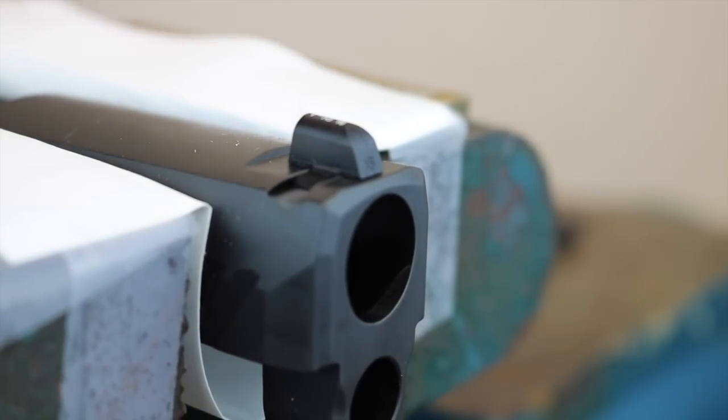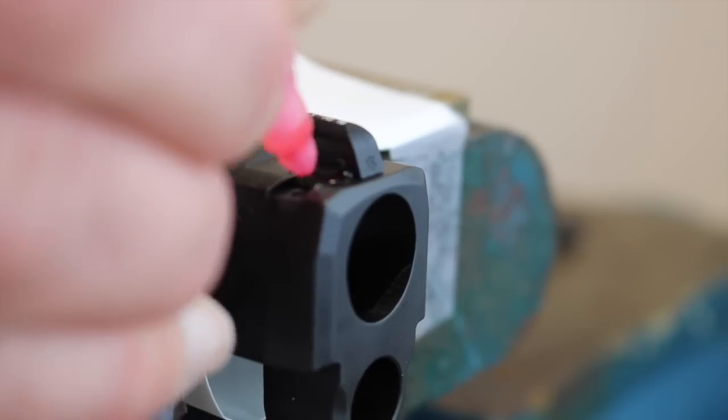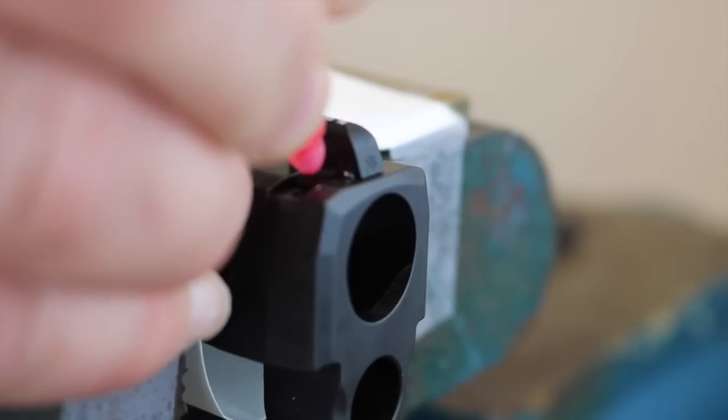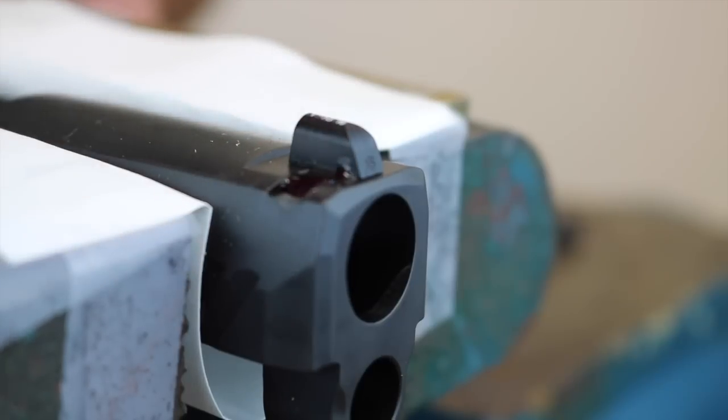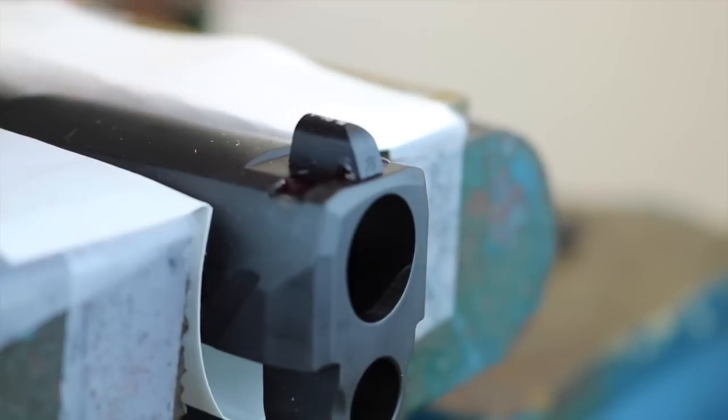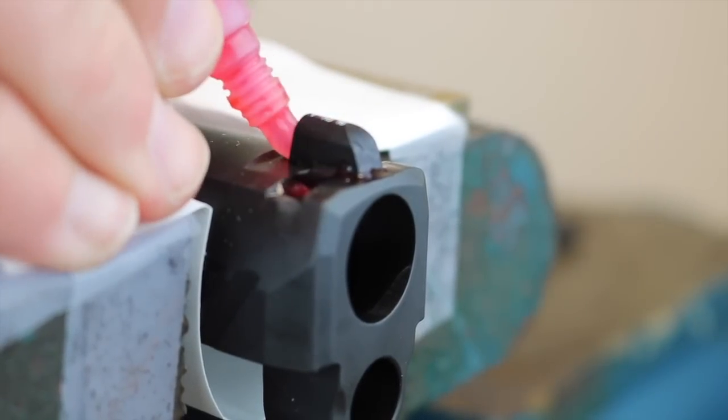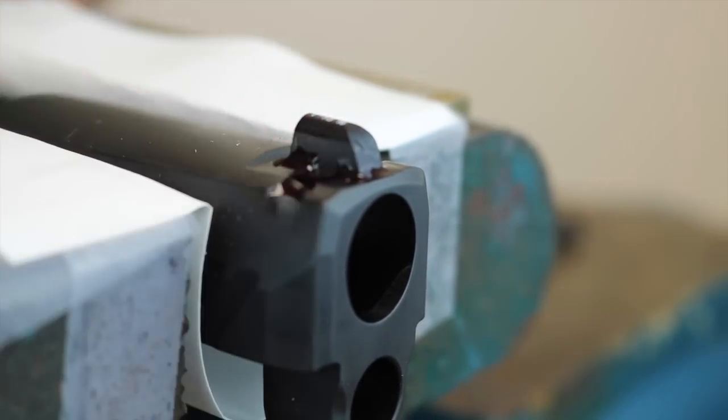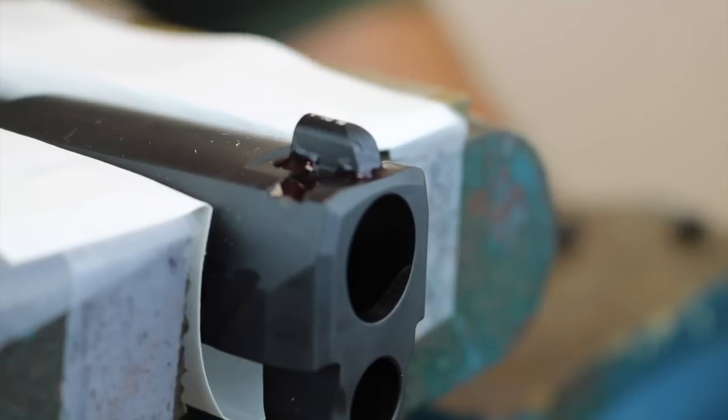Once that's done, we'll apply the red thread locking compound down in the bottom of the dovetail on each side of the front sight blade and at the juncture of the front sight and the top of the slide. We'll give that a couple of minutes to creep in and then we'll clean off the excess.